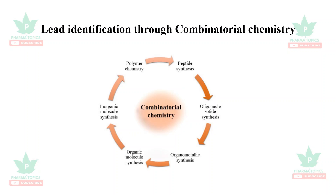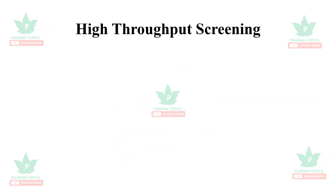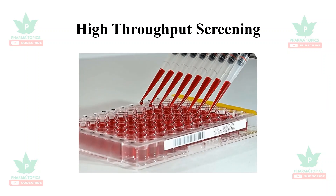Lead identification can also be done through combinatorial chemistry, which involves polymer chemistry, peptide synthesis, oligonucleotide synthesis, organometallic synthesis, organic molecule synthesis, and inorganic molecule synthesis. High throughput screening screens large libraries of compounds using embedded bioassays, which can be used for lead identification.